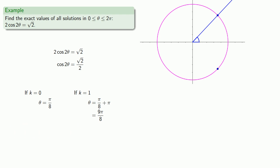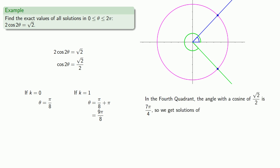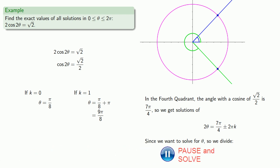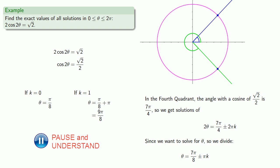But there's more. Because we drew the picture, we know there is a second angle with cosine = √2/2 — the angle in the fourth quadrant. In the fourth quadrant, the angle with cosine = √2/2 is 7π/4, giving solutions 2θ = 7π/4 plus or minus any multiple of 2π. Since we want θ, we divide everything by 2, so all solutions from this family are of the form 7π/8 plus or minus any multiple of π. We then let k take on different values and reject solutions falling outside the interval 0 to 2π.